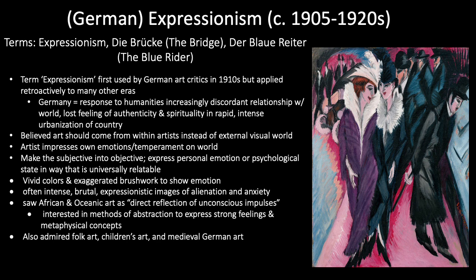Many artists responded by conveying emotions through provocative images of modern society. Like the avant-garde artists in France, German artists were also drawn to ideas of primitivism. The expressionists saw African and Oceanic art as direct reflections of unconscious impulses, and they appropriated their techniques of distorting nature as a means of expressing strong feelings and metaphysical concepts. They admired folk art, the art of children, and medieval German sculpture and prints as well, because these also deviated from naturalism. For the sake of time, we are just going to look at the two self-defined groups, Die Brücke and Der Blaue Reiter.